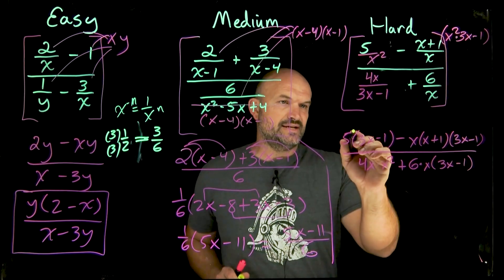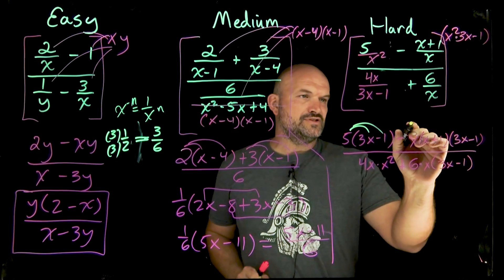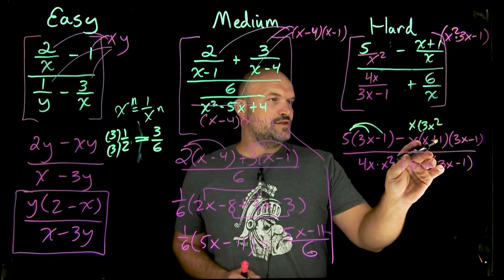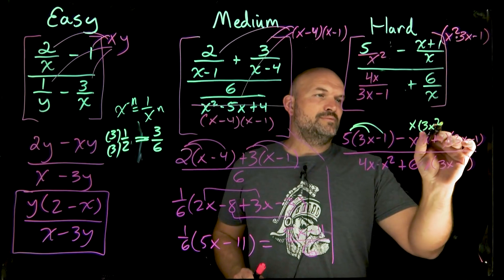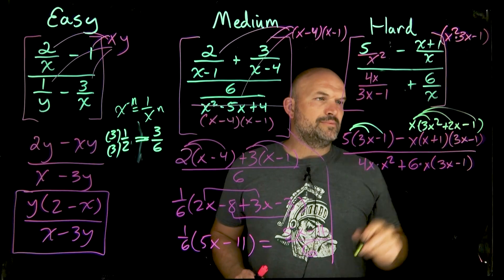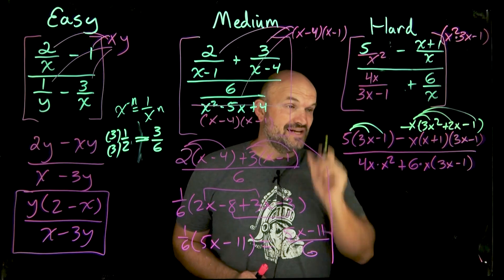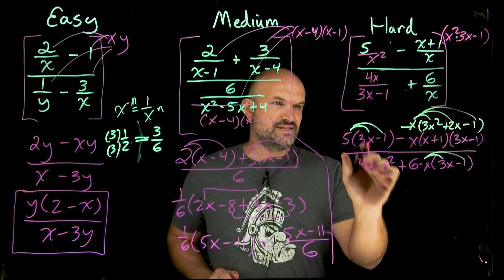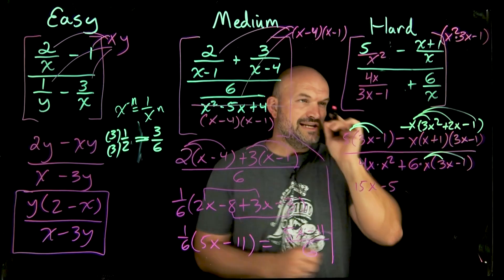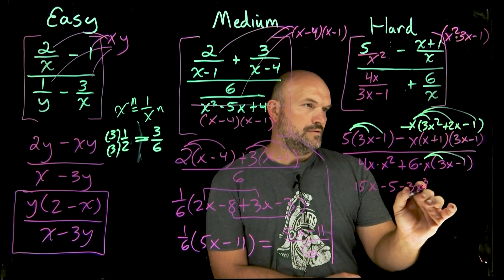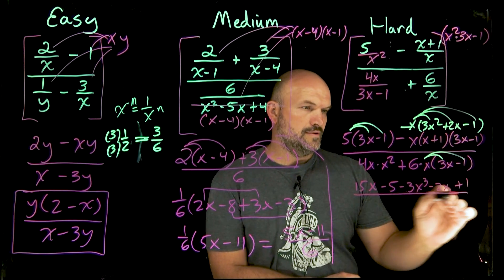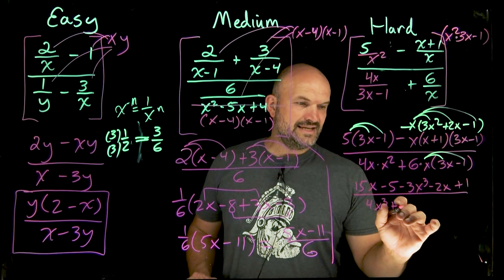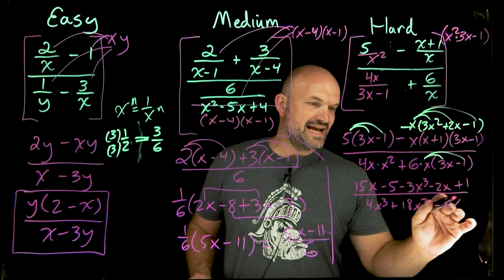Now we just simplify using distributive property. Let me multiply out x(x + 1)(3x − 1): three x times x is 3x², three x times one is 3x, x times negative one is negative x, so that's plus 2x minus one. Applying the x gives 3x³ + 2x² − x. The numerator gives 15x minus five. The denominator terms give negative 3x³ − 2x² + 16x − 5 in the numerator, and 4x³ plus 18x² minus 6x in the denominator.